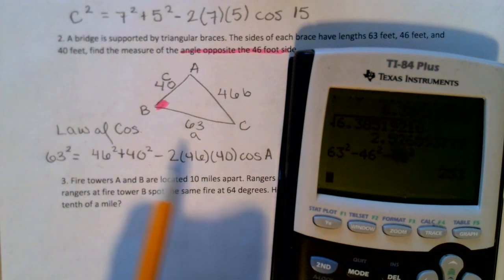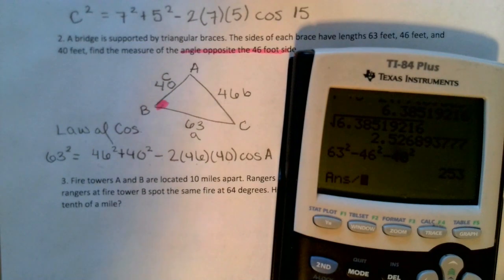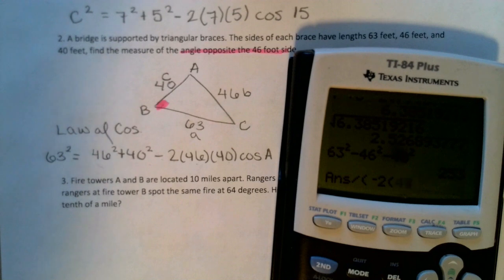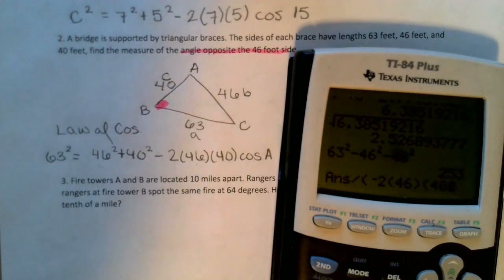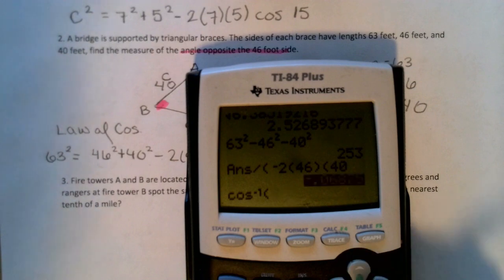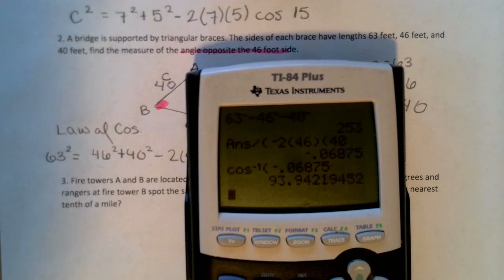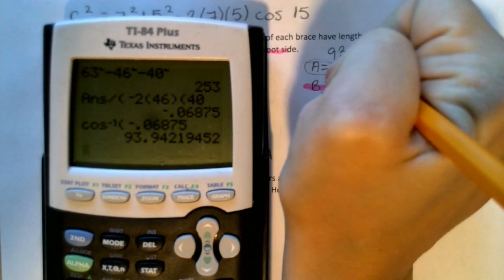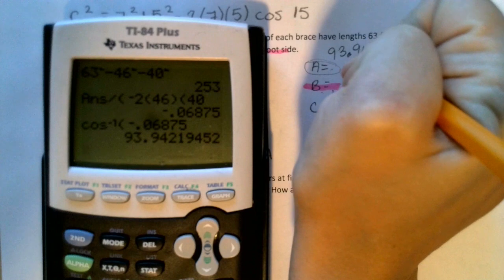Subtract 40 squared. And if you remember, this negative 2, 46, and 40 are multiplied to cosines. So to get rid of it, we have to divide. But don't forget parentheses. Negative 2 times 46 times 40. And then to get rid of cosines, we have to do the inverse cosines. So we get that angle A is 93.942.